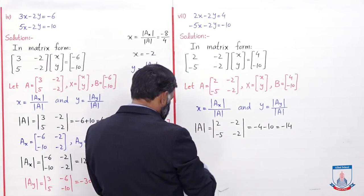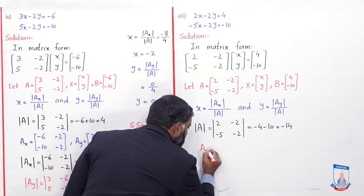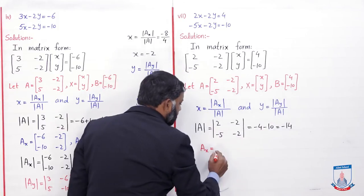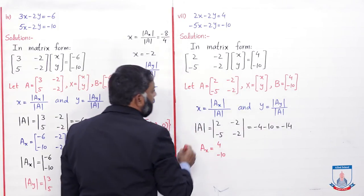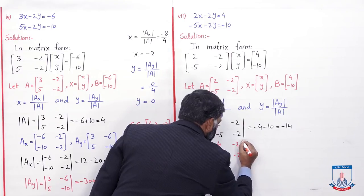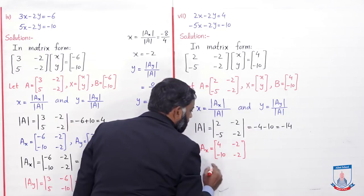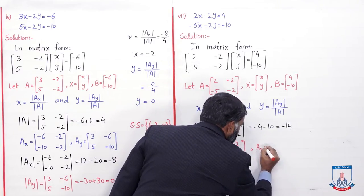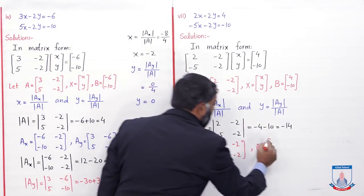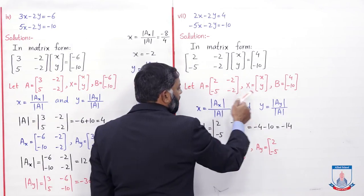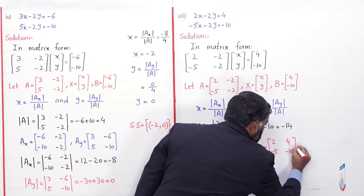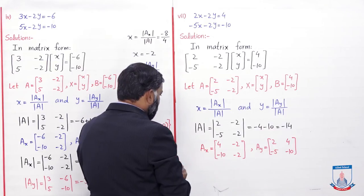Ax matrix mein A matrix ke first column ki jagah B matrix wala column aayega: 4, minus 10; second column as it is aayega: minus 2, minus 2. Ay matrix likhenge: Ay matrix mein A matrix ka first column as it is aayega, second column ki jagah B matrix likhenge: 4, minus 10. Ab det(Ax) ki value find karenge.